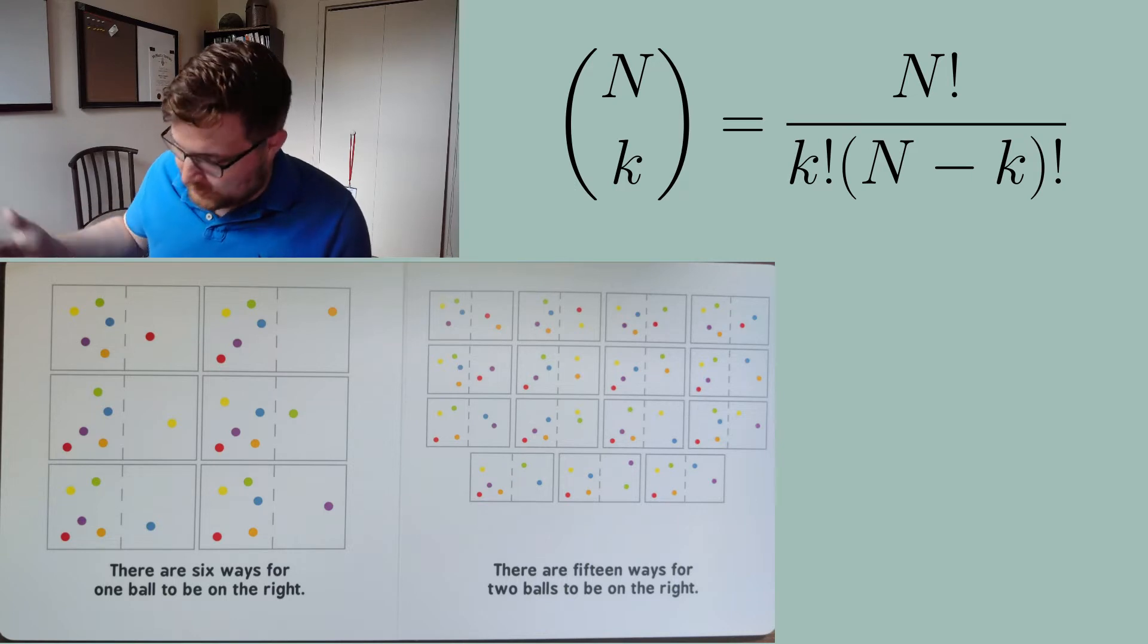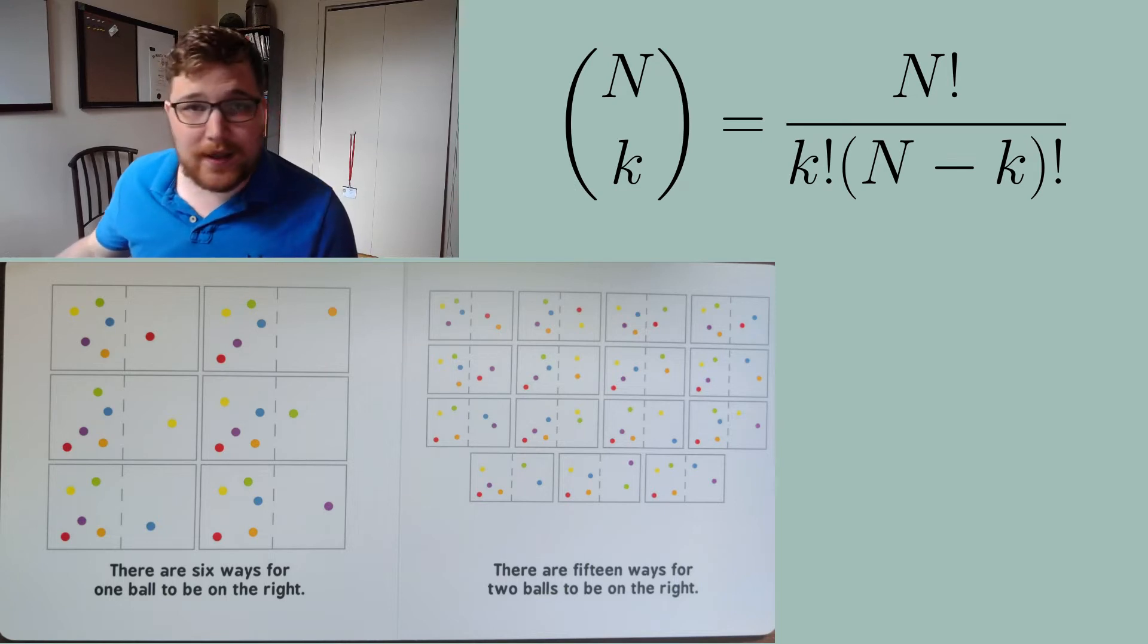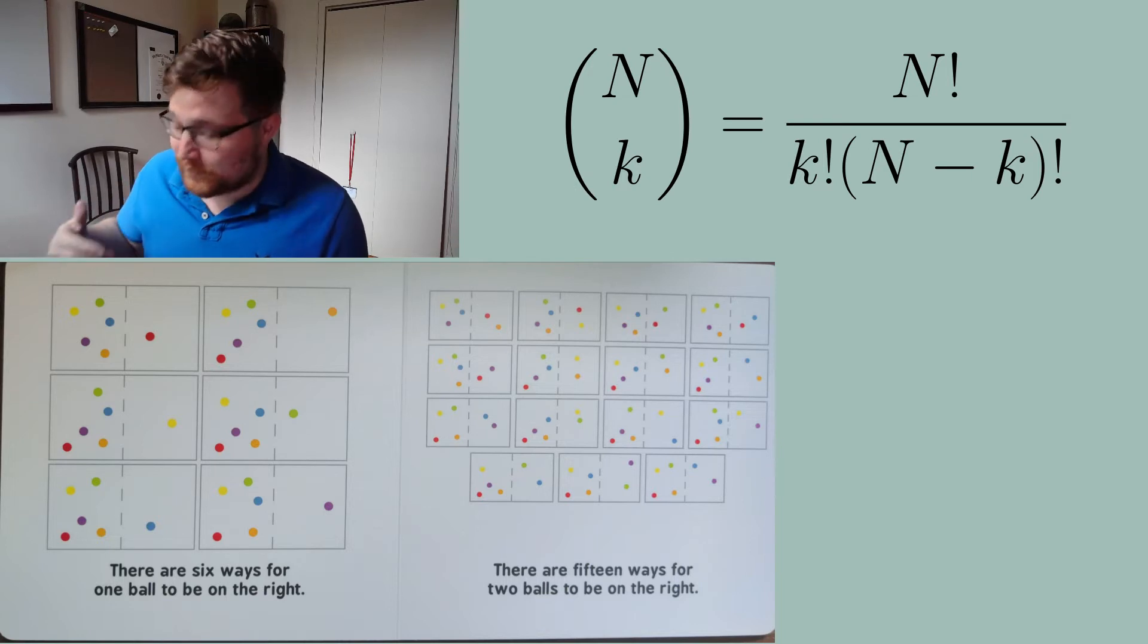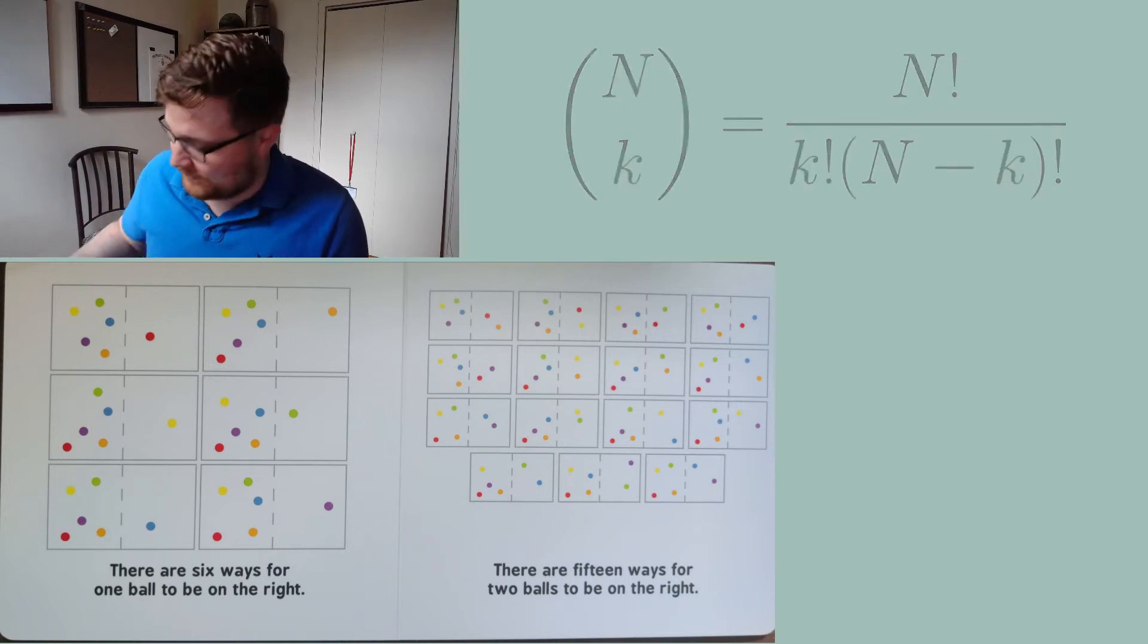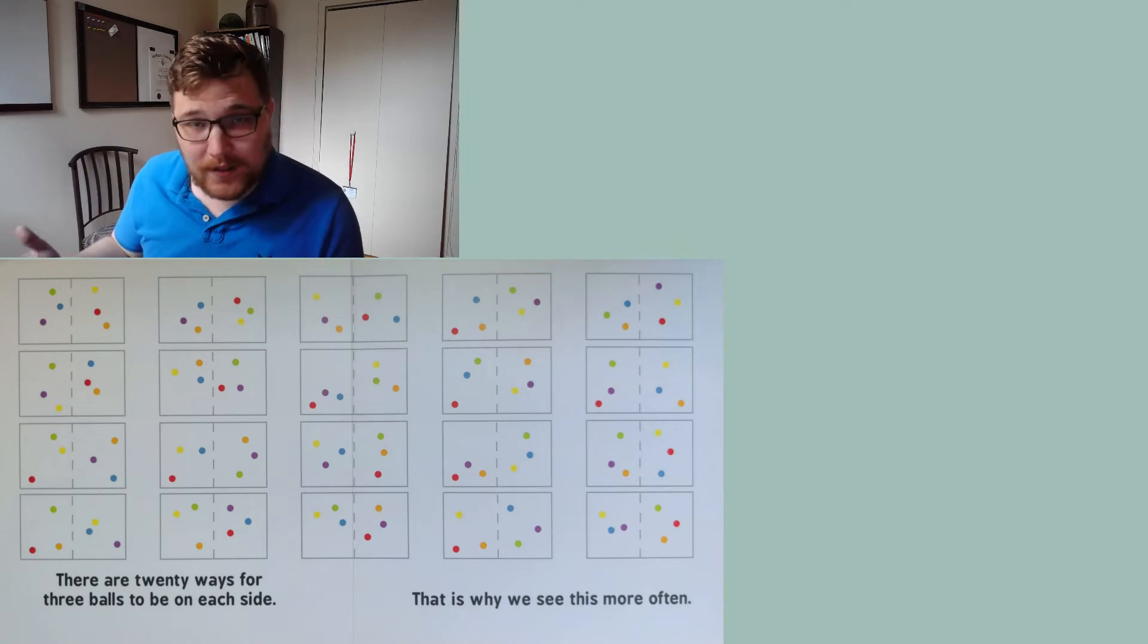And so there are 15 ways for two balls to be on the right. And so this is six choose two because we have six balls and we're choosing two of them to be on the right hand side, and that turns out to be 15 ways. So this is a very typical sort of math problem that you would encounter in an introductory stat mech course. There are 20 ways for three balls to be on each side.